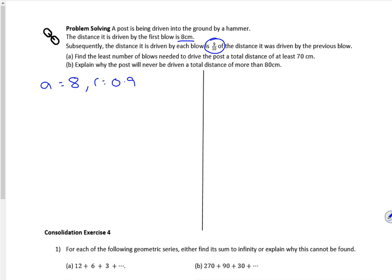Find the least number of blows needed to drive a total distance of at least 70 centimeters. Right, that's a sum. I want to know how many times I'm going to hit it, so I want the n number where I'm going to go more than 70 centimeters.